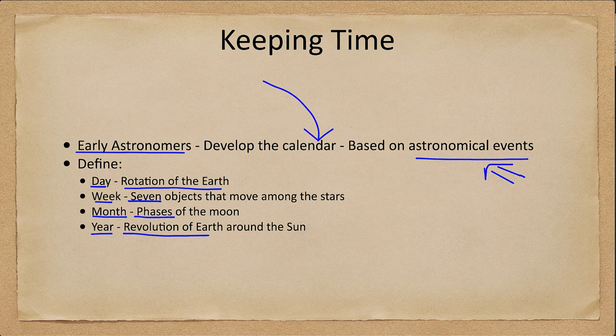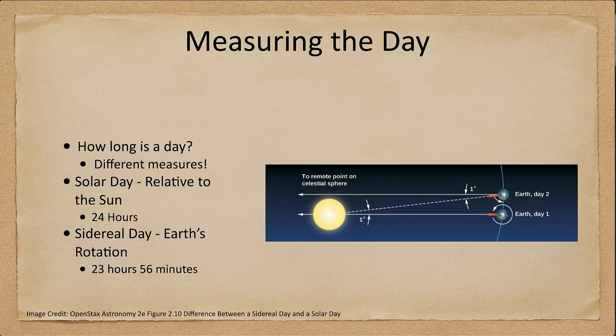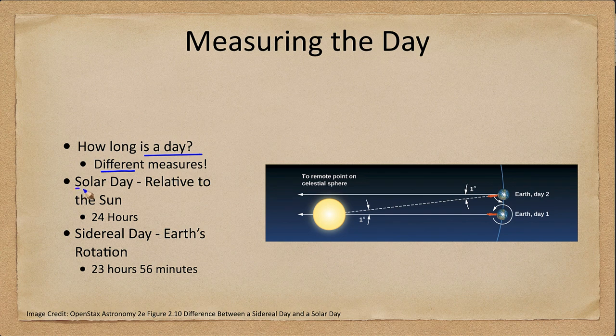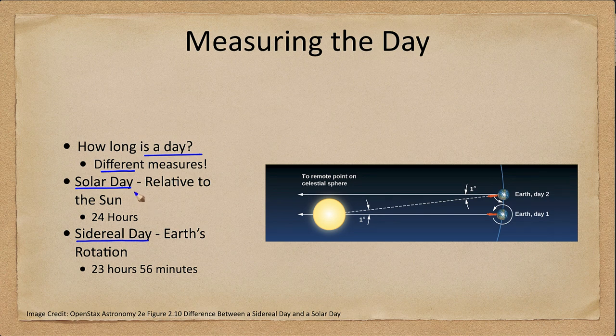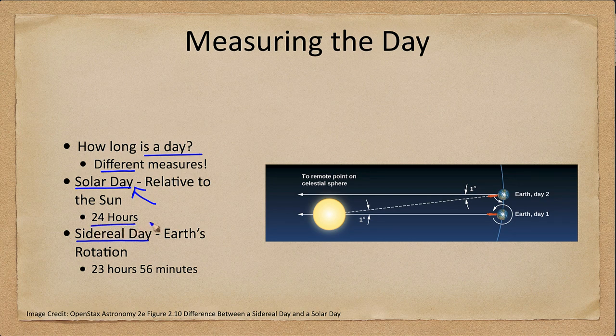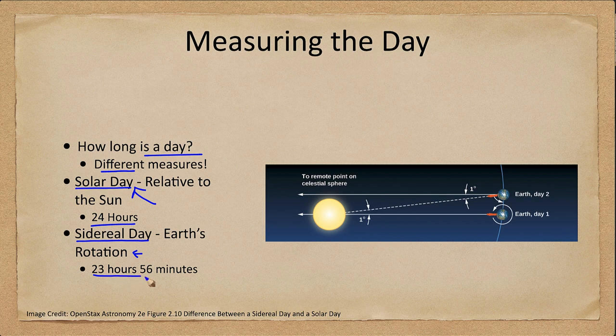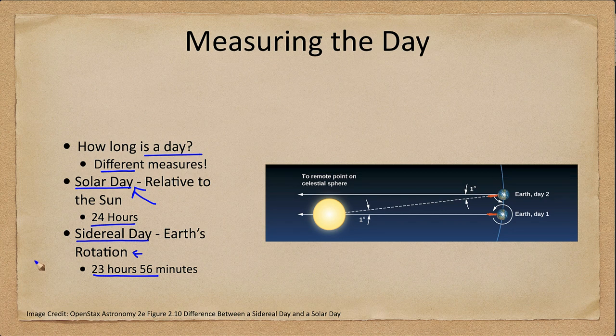So how do we measure a day? How long is a day? Well it actually varies, so there are different measures of a day. We talk about a solar day as compared to a sidereal day. A solar day which is what we use for everyday measurement is exactly 24 hours. This is relative to the Sun. The sidereal day on the other hand, relative to earth's rotation, is 23 hours and 56 minutes long. So while they're close they are not exactly the same.